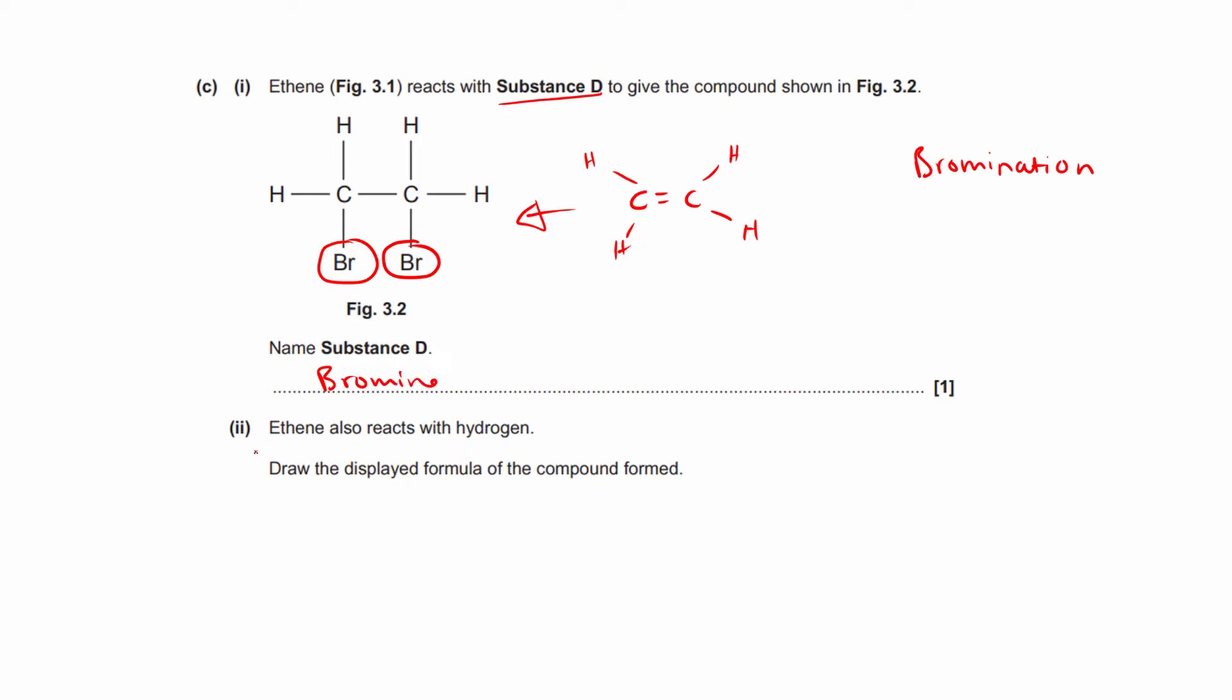Last part, C-ii. Ethene also reacts with hydrogen. So when it reacts with bromine, it's called bromination. When it reacts with hydrogen, it's called hydrogenation. Again, it's not asking you to name it, but I'm just telling you as a side note. Draw the displayed formula of the compound formed.